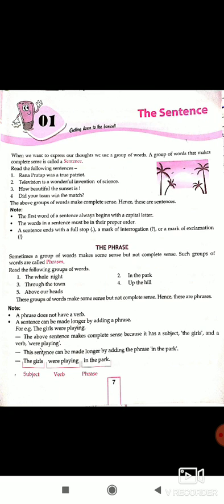For example, 'The girls were playing' is a complete sentence — it has a subject 'the girls' and the verb 'were playing.' This sentence can be made longer by adding the phrase 'in the park': 'The girls were playing in the park.' Where were the girls playing? In the park. So 'in the park' is our phrase. When we add this phrase, it makes a longer, complete sentence.